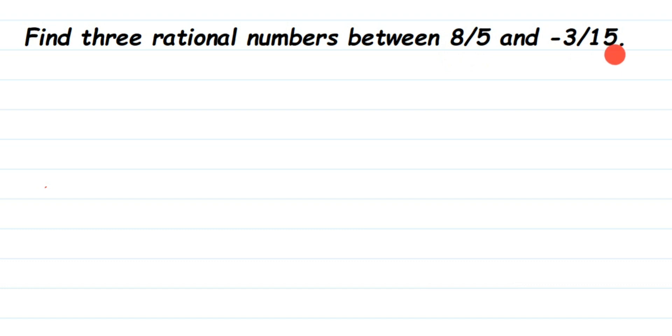For the second number, we have -3/15, and that number can be reduced. So we're going to reduce -3/15 to the lowest form first, and then we'll see if the denominators are the same or not.